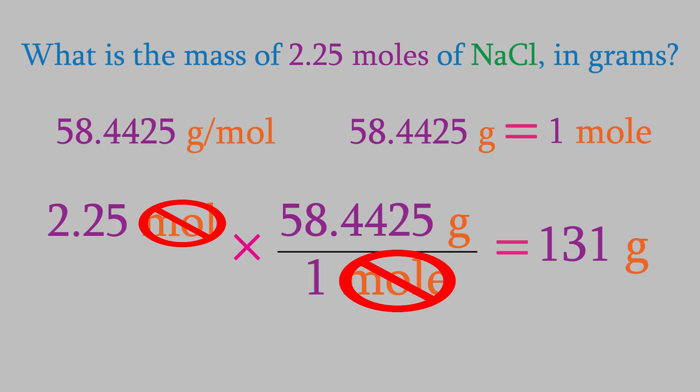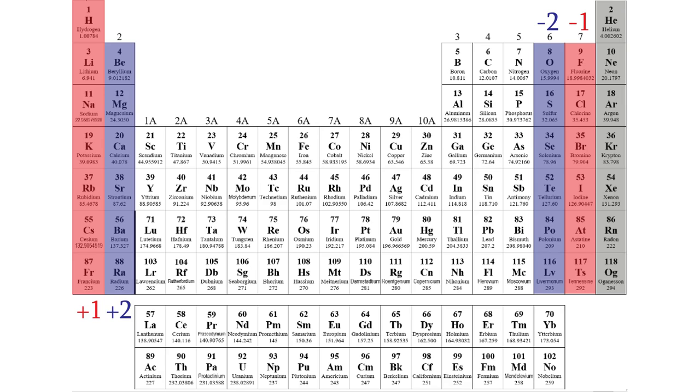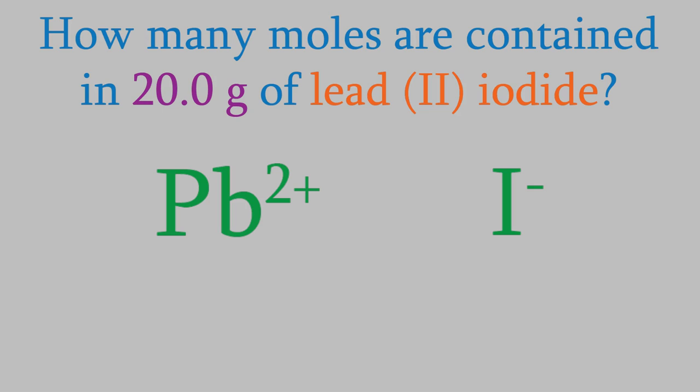We've been working with NaCl quite a lot, so let's try a problem with a different compound. How many moles of lead (II) iodide are in 20.0 grams? This will tie together several things we've learned in the past few videos, so it's a good one to try. First, we need to figure out the formula of lead (II) iodide. The formula name tells us that the two atoms in this compound are lead and iodine. Also, the Roman numeral 2 tells us that the charge on the lead is plus 2. To get the charge on the iodine, we look at the periodic table. Based on where iodine is, we can see that it has a charge of minus 1. So to make the charges cancel, the formula of lead (II) iodide must be PbI2.